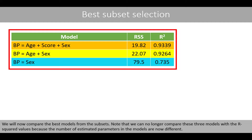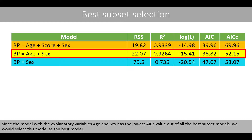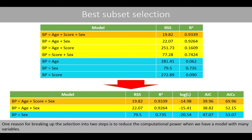We will now compare the best models from the subsets. Note that we no longer compare these models with the R-squared values because the number of estimated parameters in the models are now different. We should therefore use, for example, the AICc value to compare the models. Since the model with the explanatory variables age and sex has the lowest AICc value out of all best subset models, we would select this model as the best model. One reason for breaking up the selection into two steps is to reduce the computational power when we deal with many variables.